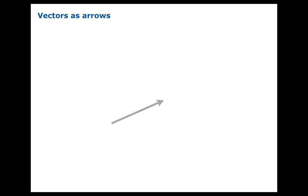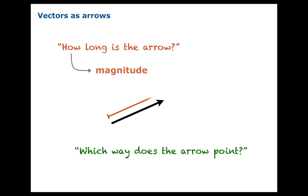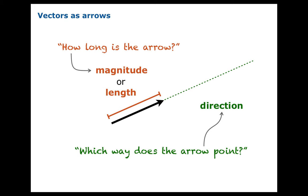Essentially, a vector is an arrow. There are two questions you could ask about an arrow that are pretty obvious: how long is the arrow, and which way does the arrow point? The answer to the first question is what we call the magnitude or the length of the vector, and the answer to the second question is what we'll call the direction.